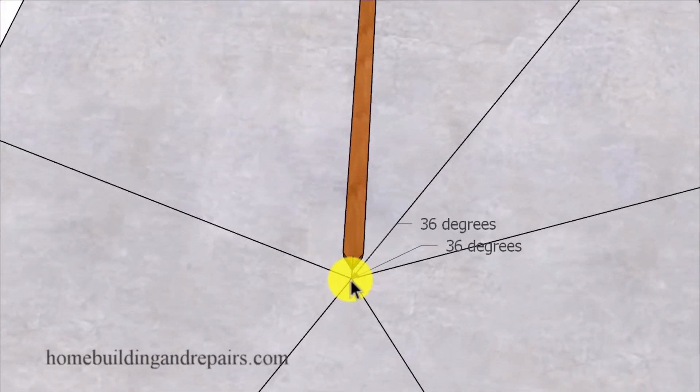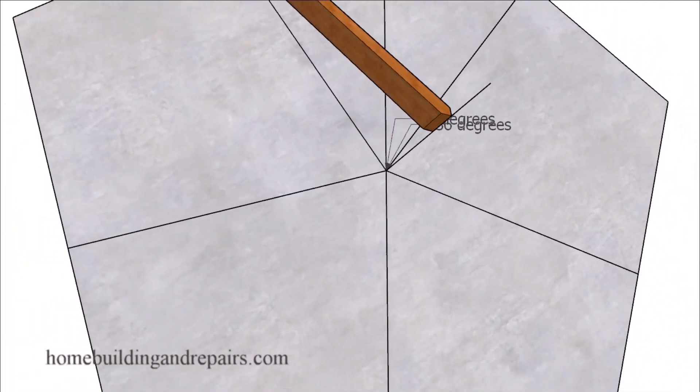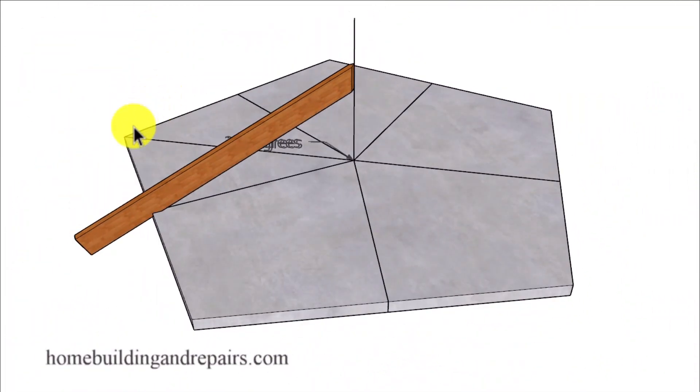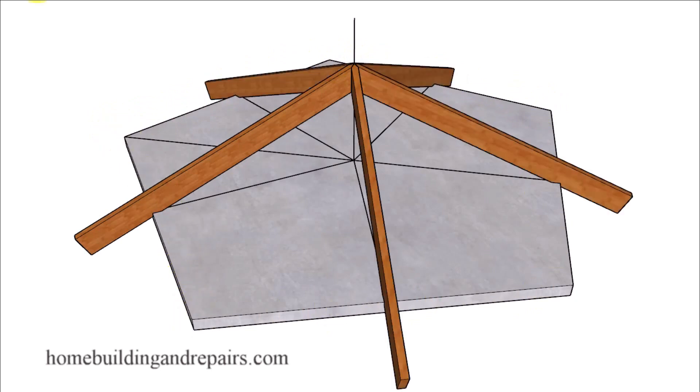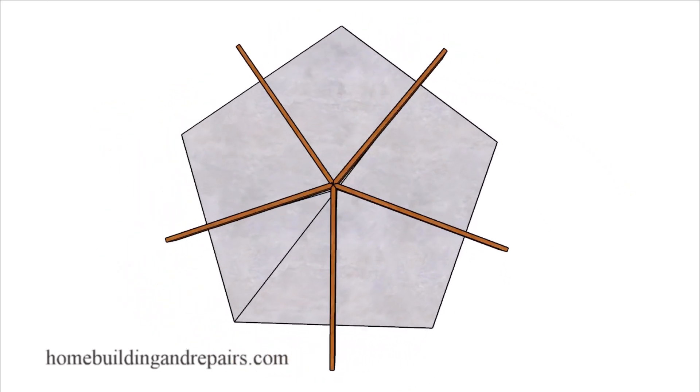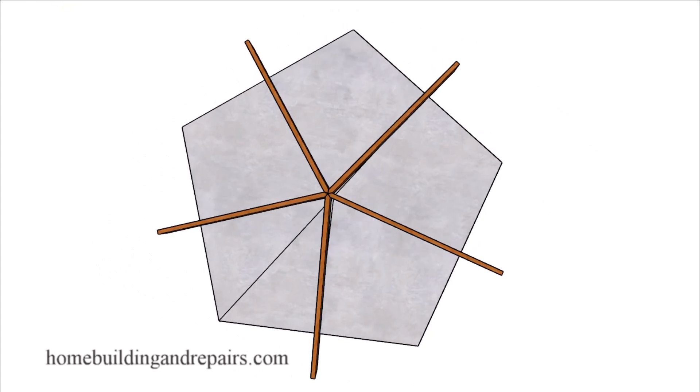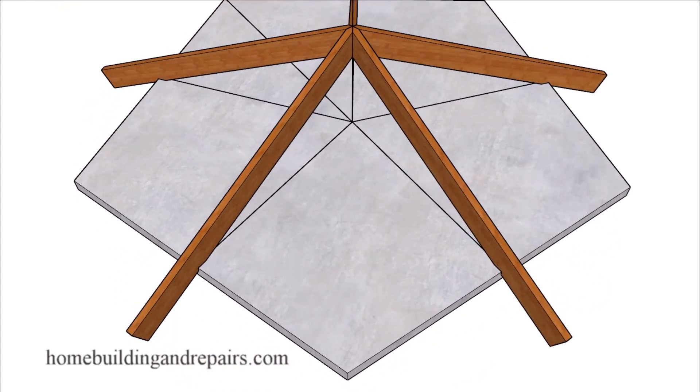Again this is the center coming up, a level line off of the center. These measurements might not work if you do not have a perfectly shaped pentagon with all of the angles correctly positioned along with equal measurements around the perimeter of the building. And of course this is what it would look like after you cut and installed your five roof rafters.